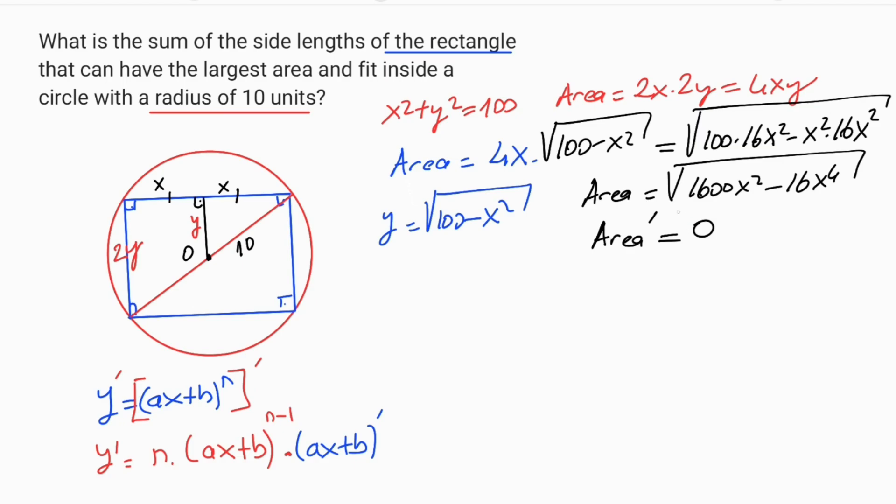Now easily we can take the derivative of this expression. Therefore 1600x squared minus 16x to the power of 4 whole to the power of 1 over 2. If we put 1 over 2 at the beginning, like this, in parenthesis 1600 times x squared minus 16x to the power of 4 whole to the power of 1 half minus 1.